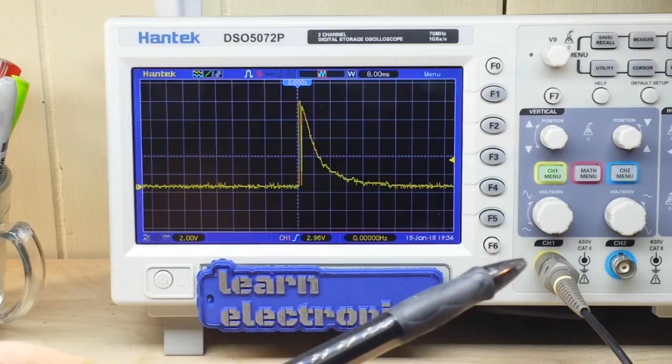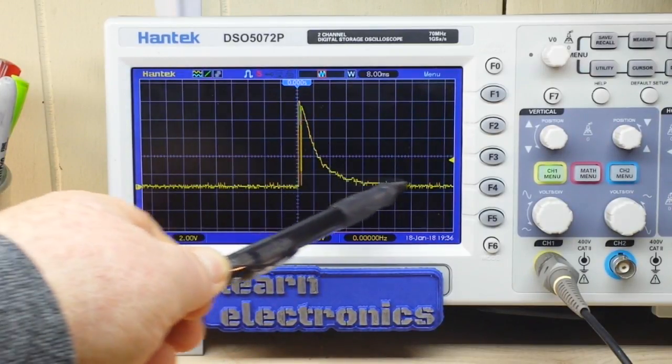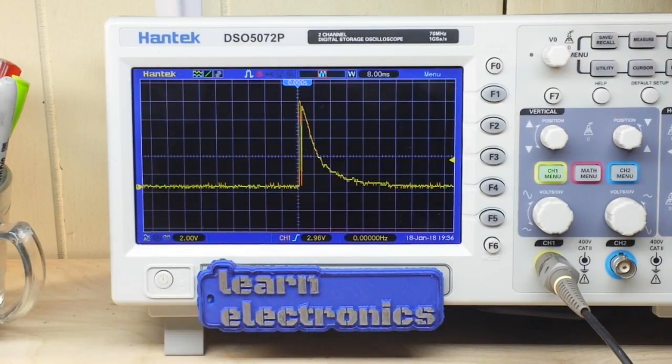Blocks DC, passes AC. So there you have it, AC coupling versus DC coupling in your oscilloscope.